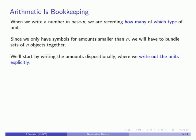So our bundling allows us to write down the amounts for any number of objects. We'll start by writing out the amounts dispositionally where we're going to write out the units explicitly. So again arithmetic is bookkeeping. We want to write down how many using our abstract symbols and which type using however we're going to represent those units.